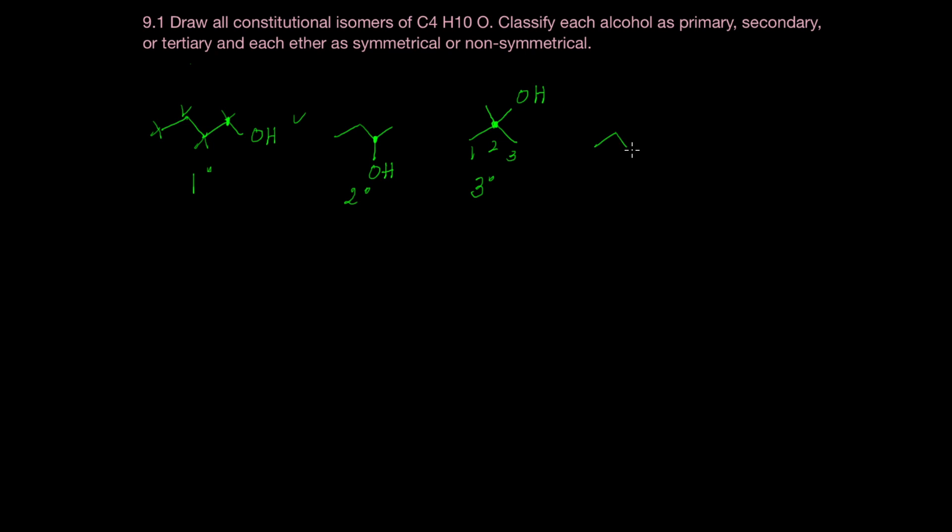Another way we could set this up is to put that methyl group off of the central carbon here, number two, but put the OH group coming off of carbon three. It's just another statistical possibility, and you can see how this alcohol is a primary alcohol. So I've come up with four here. I hope I'm not missing any.